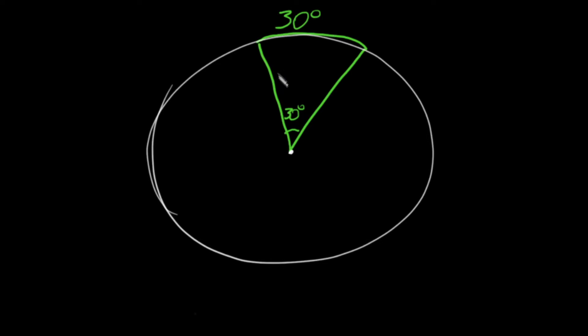An inscribed angle is one where the vertex is on the circle itself — so it could be down here. Let's have this inscribed angle intercept the same arc as the central angle.